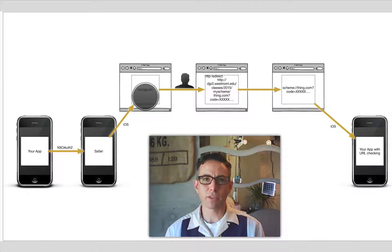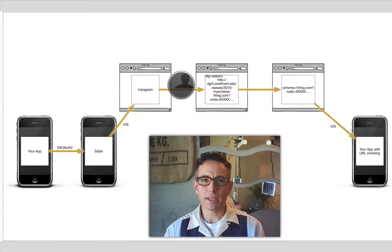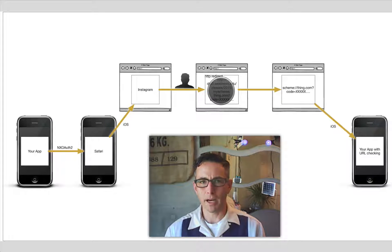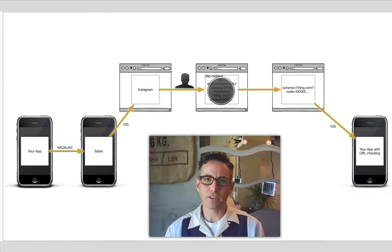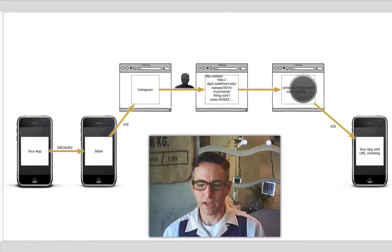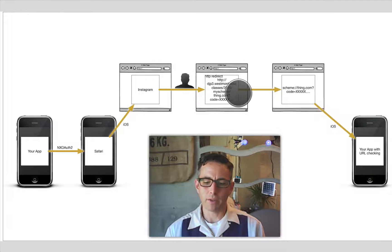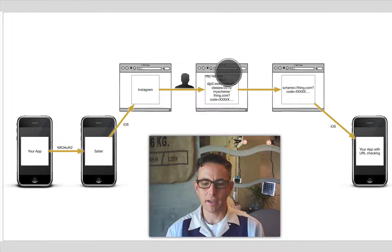Instagram takes control of the process through the Safari web browser; the user enters their credentials. Now if the credentials are correct, we are going to load a different URL into the client registry — one that starts with HTTP but goes to a script running on the internet. I've provided a sample one at my server. That script on the internet is going to transform the URL that was used to open it, transforming it so that 'scheme' becomes the protocol. Now that we've opened a URL with a different protocol, iOS will look in the info.plist file to see what was registered to handle that protocol, and your app will load up again.